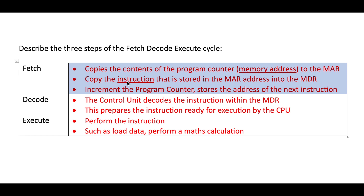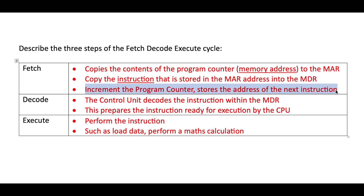Next, we copy the instruction stored at that address into the Memory Data Register, so we now have the actual instruction we wish to execute within the MDR. The third part of the fetch stage is to increment the Program Counter, moving on to the address of the next instruction that will be fetched as part of the second iteration through the fetch-decode-execute cycle.